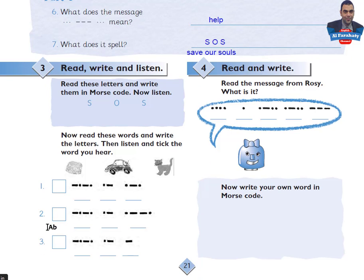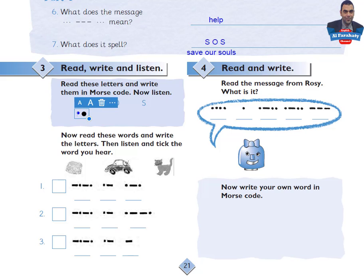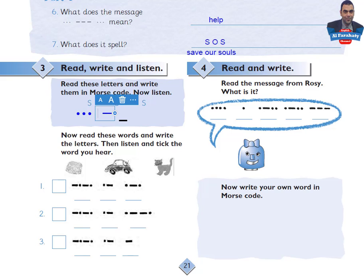Activity 3: Read, write, and listen. Read these letters and write them in Morse code. Letter S is written as three dots — one, two, three. Letter O has three dashes. Then S again. So it spells SOS — Save Our Souls.